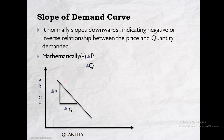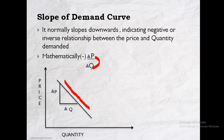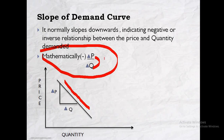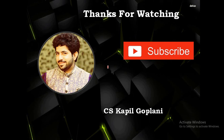Talking about the slope — in mathematics, if we find the slope of any curve, the formula is change in Y upon change in X. Here also I am applying the same formula: change in price as delta P and change in quantity as delta Q. There is a negative sign because price and quantity have a negative relationship — if one has a positive change, the other will have a negative change because of the law of demand. So mathematically, the slope of the demand curve is expressed as minus delta P upon delta Q. I will tell you about the law of demand in my next lecture. Thanks for watching this lecture, kindly subscribe my channel for further updates.